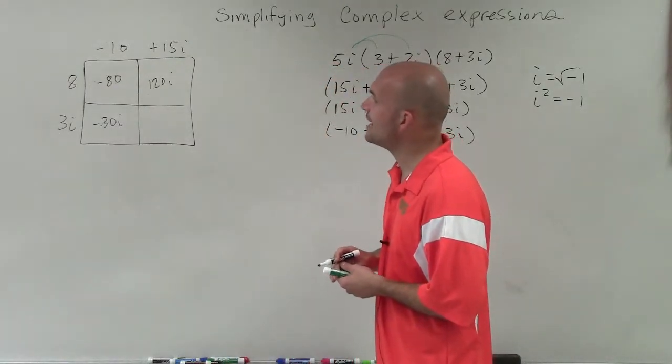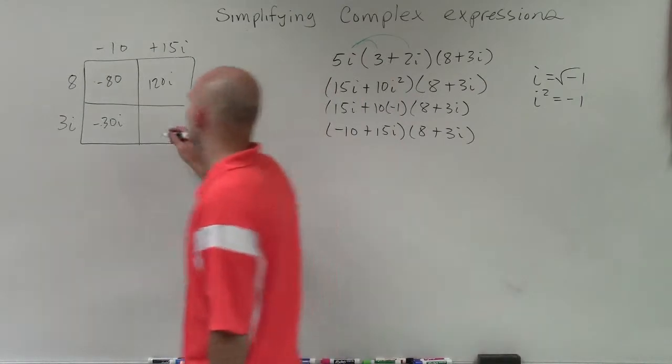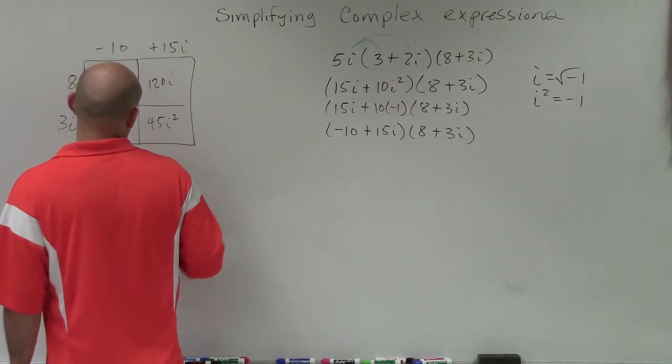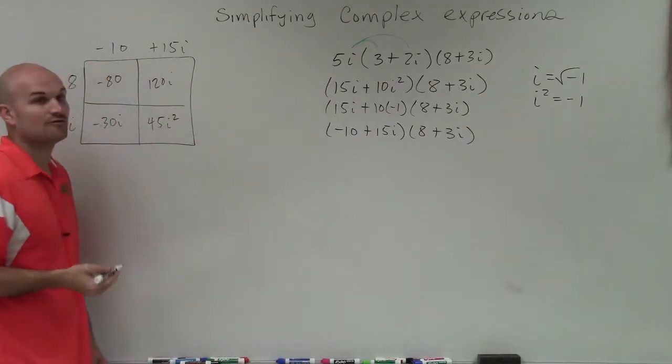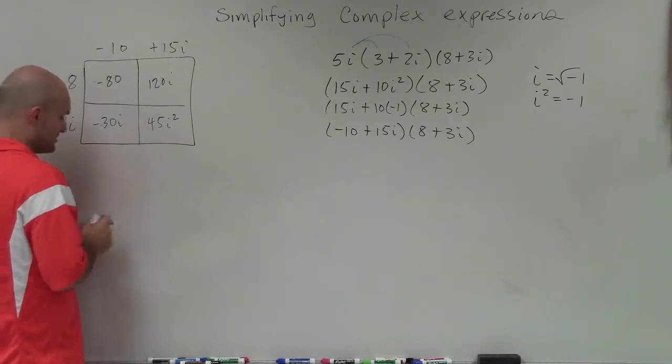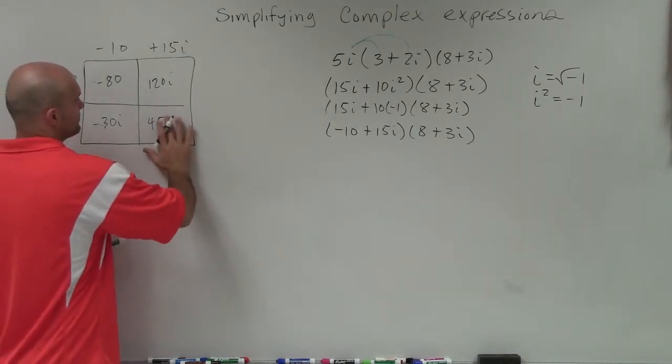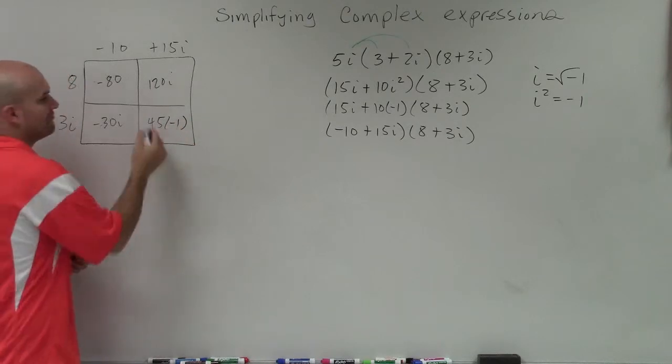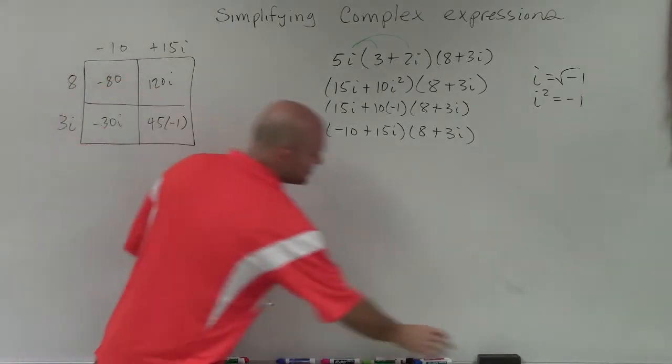3i times 15i is 45i². But remember, i² represents negative 1. So 45 times negative 1 is negative 45.